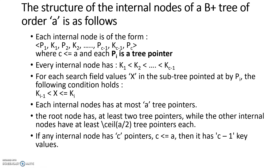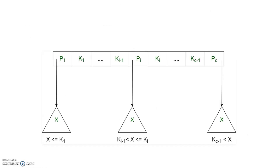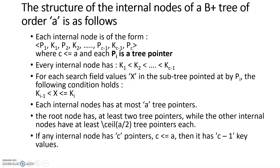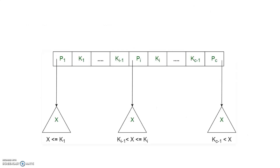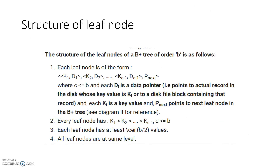This structure is exactly the same as that of the B tree — the rules are also exactly the same — except that the leaf node has a different structure. These are the subtrees and these are the keys; if you want to find something less than a key, go to the left subtree; between two keys, go to the corresponding subtree. The rules for internal nodes and the root node are identical to B tree — nothing new here.